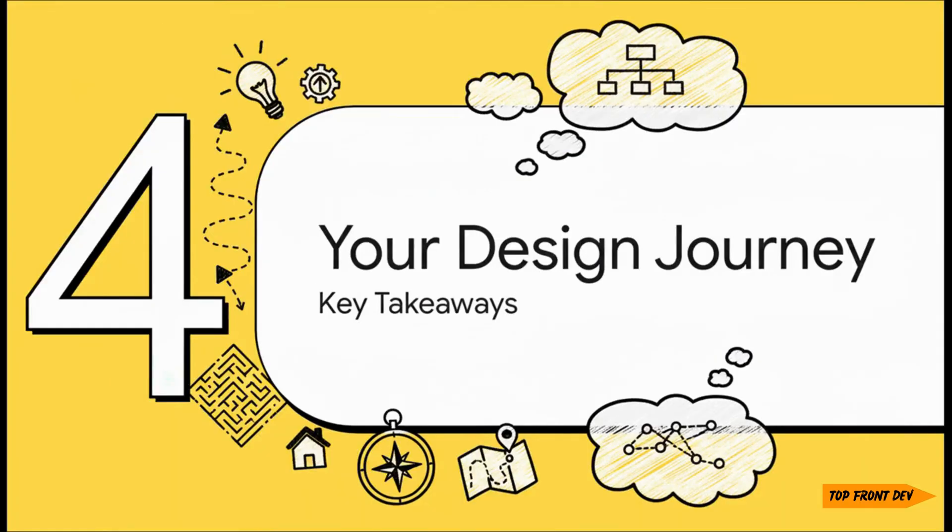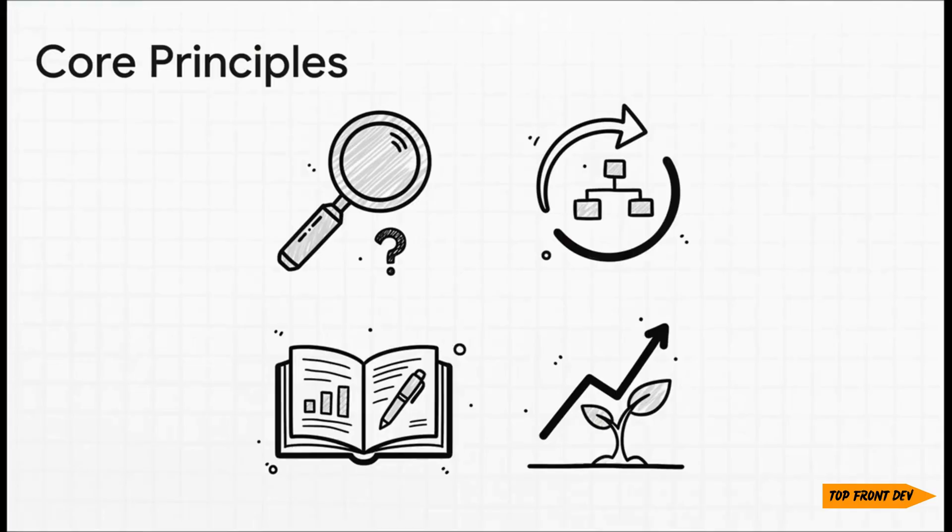So there you have it. We've walked through the entire process, all the way from a vague problem to a living, breathing system. Let's boil this all down to the core principles you can take with you on your own design journey. Try to remember these four things. First, always understand the requirements, the what, before you even start designing the how. Second, embrace iteration. Your first sketch of the architecture is almost never your best one. Third, document your design decisions. It's a true sign of a professional. And finally, always remember that your system is never really done. It's always evolving.